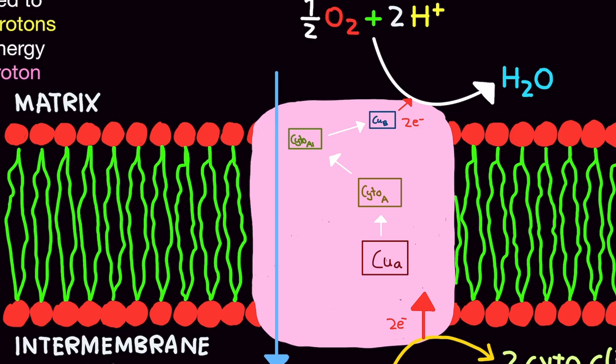So first, it's going to go to this copper subunit, copper A, then cytochrome A, then cytochrome A3, and this copper B unit. That's basically it. So once it's at the copper B unit, it's far enough we can actually go to the matrix.